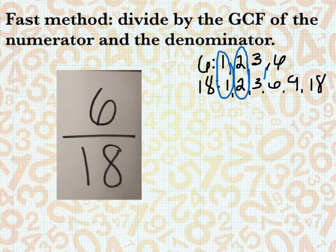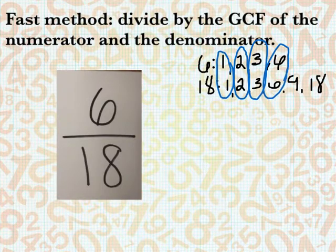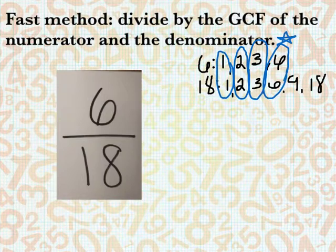2 is a common factor. 3 is a common factor. 6 is a common factor. So in the end, 6 is the greatest common factor.